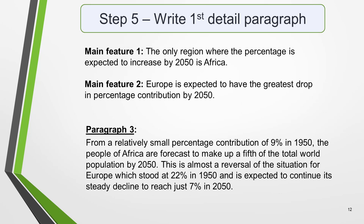Paragraphs 3 and 4 of your table chart essay are where you include more detailed information about the data in the graphic. In paragraph 3 you should give evidence to support your first one or two key features. Main feature one was: the only region where the percentage is expected to increase by 2050 is Africa. And main feature two is: Europe is expected to have the greatest drop in percentage contribution by 2050. For example: 'From a relatively small percentage contribution of 9% in 1950, the people of Africa are forecast to make up a fifth of the total world population by 2050. This is almost a reversal of the situation for Europe, which stood at 22% in 1950 and is expected to continue its steady decline to reach just 7% in 2050.'